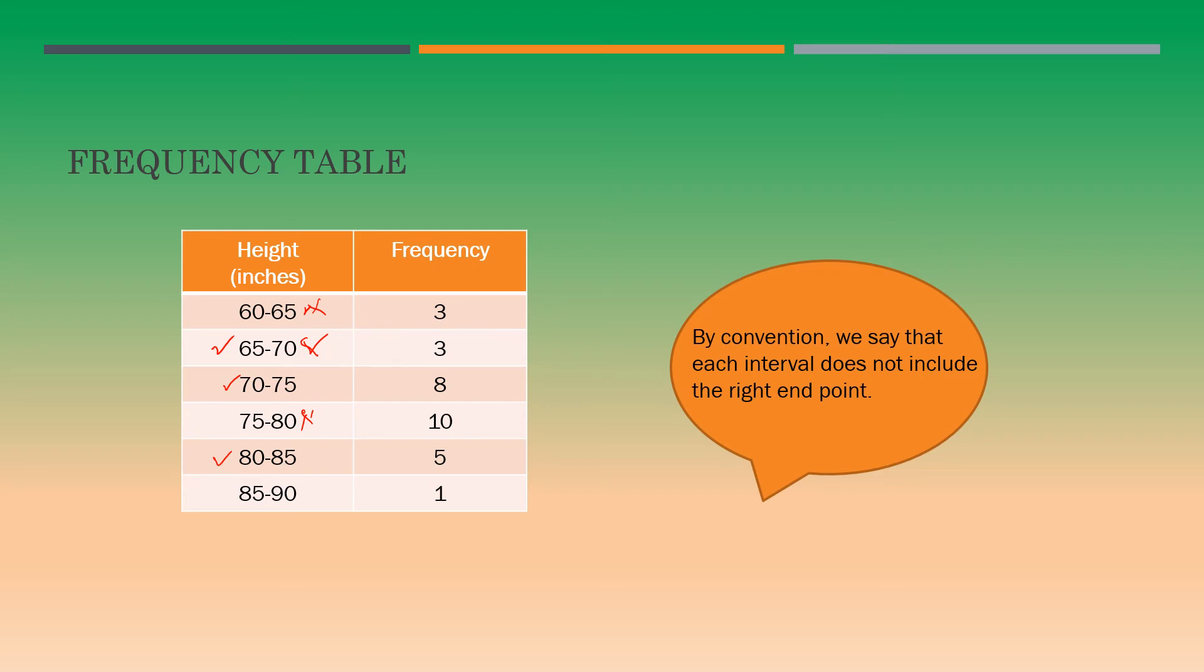You may be wondering, why can't I take this as 60 to 64, and then 65 to 69, and then 70 to 74? If I am taking from 60 to 64, and then 65 to 70, since there is no continuity, what will happen to the case when the height is 64.5? Where will that fit? To avoid that confusion, we prefer taking it as 60 to 65, which says that just 65 is not included. Everything less than 65 is included in the first interval. So there will be continuity if you are taking it this way.